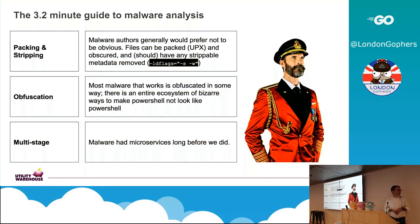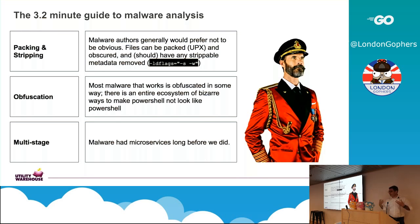Most malware tends to be multi-stage. A dropper will go on and then pull something down, and the thing it pulls down will do the interesting stuff. Really, the key is to get something in there that starts beaconing out, talking to something else, pulling down a payload, getting interesting — and that's usually where the errors occur.